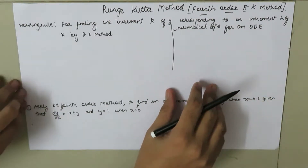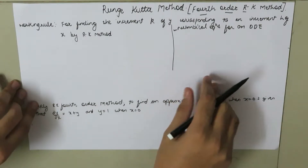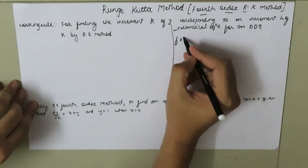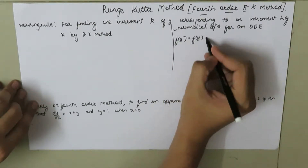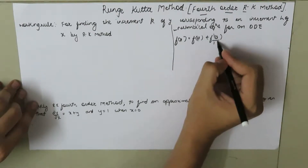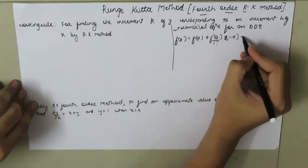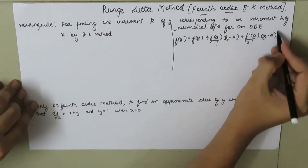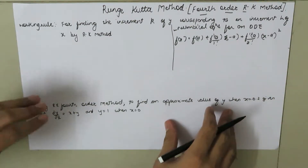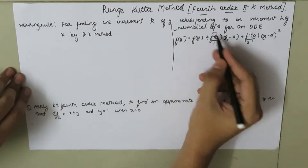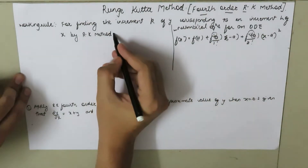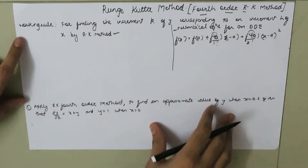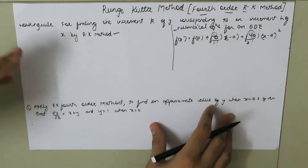We have another method called the Taylor series method. In the Taylor series method we use f(x) = f(a) + f'(a)/1! * (x-a) + f''(a)/2! * (x-a)². In the Taylor series method we need to find higher order derivatives. But in the case of the RK method, we don't need to find higher order derivatives. So let's see the working rule for the RK fourth order method.